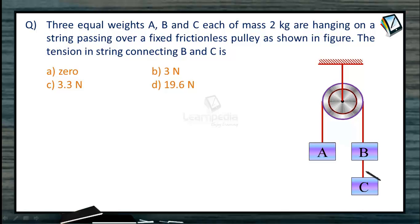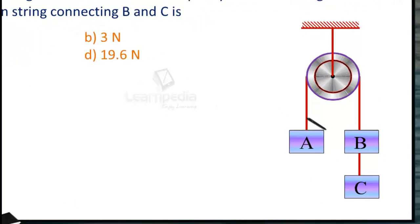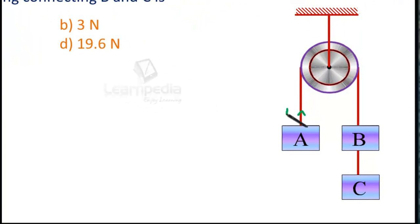The tension in the string connecting B and C we want to calculate. Let us call the tension in the string at this position T1. The same string will be carried here so tension will be T1. Let us say tension at this point is T2 for body B. For body C, tension will be equal to T2.